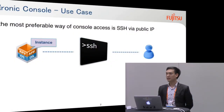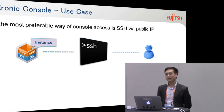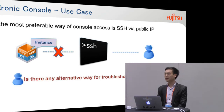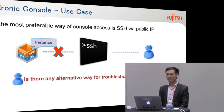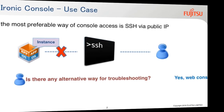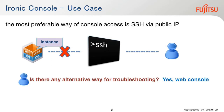In the first part, I want to present about Ironic Console. As you know, the most preferable way of console access is SSH via a published IP in troubleshooting. But what happens when a system gets a problem and the user or operator cannot access SSH? The question is: is there any alternative way for troubleshooting? Fortunately, yes — we have web console for access when troubleshooting a system.